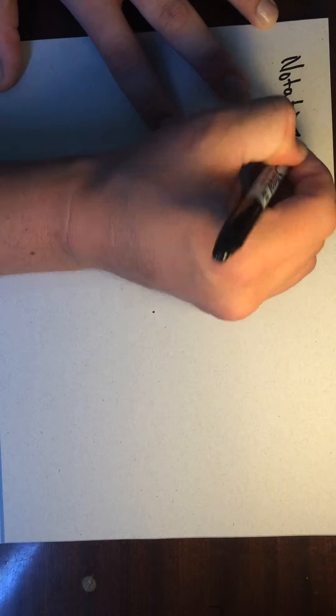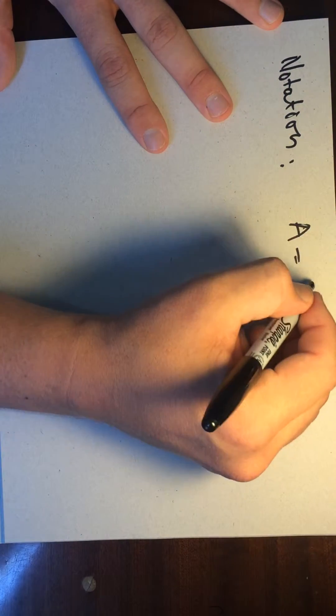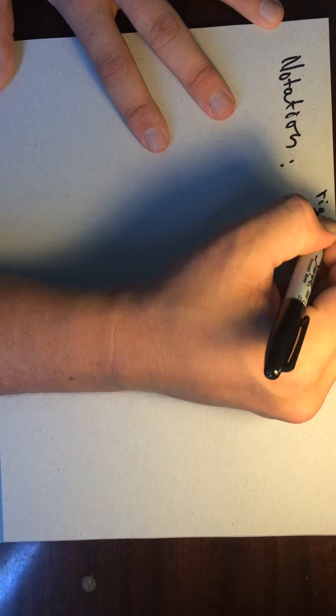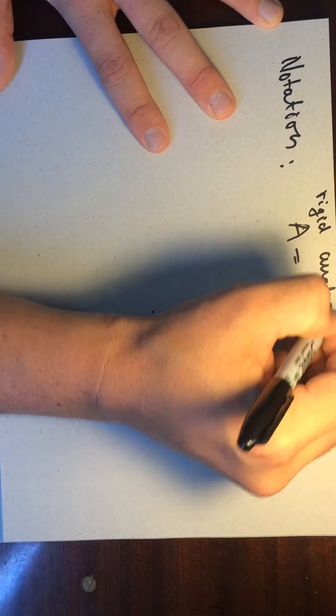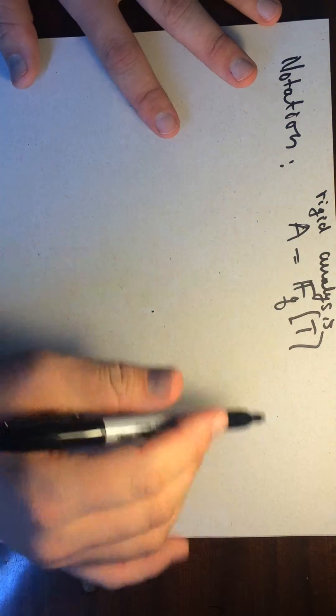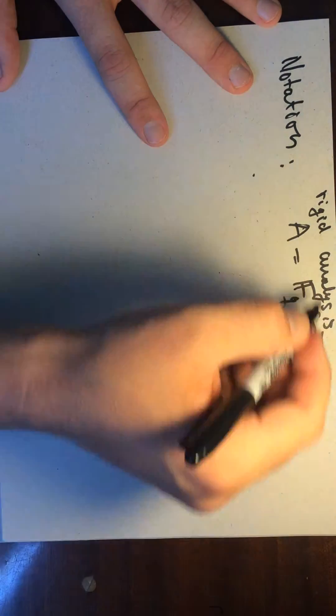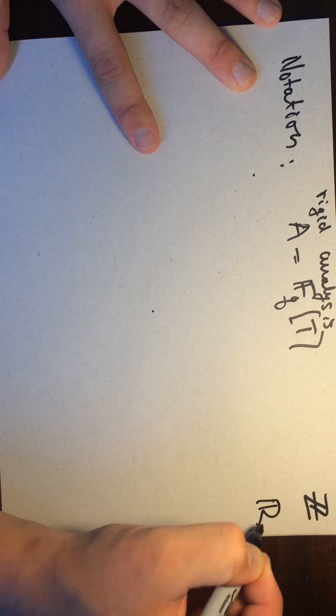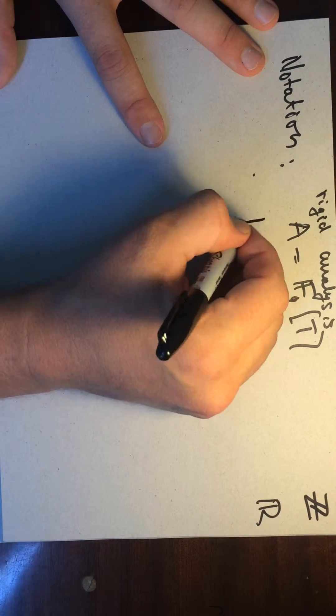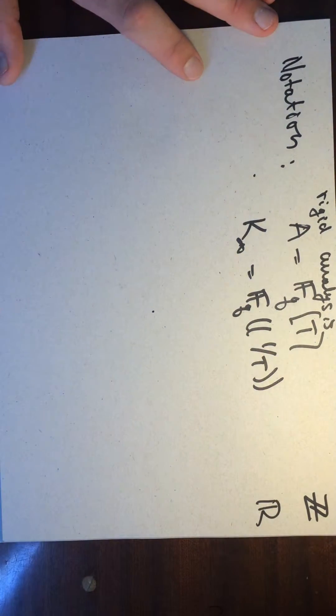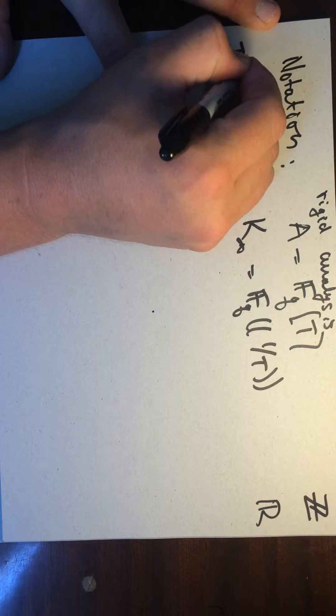So that's that. So now to talk about Drinfeld modules, I need to fix some notation. So A is going to be, so what we're going to do is we're going to kind of do some things where we, this is kind of like rigid analysis here. And so we're going to do a lot of analytic things. Okay. And it's going to look a lot like classical complex analysis. And so this thing, okay, so this plays the role of the integers. So this is like the integers. What we're going to do is we're going to look at something like the real numbers. And so I'm going to call this K infinity. So this is going to be F_Q one over T like so. And so this is the T inverse adic completion.